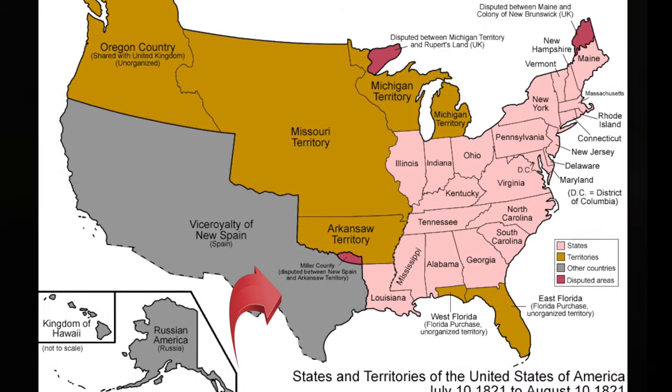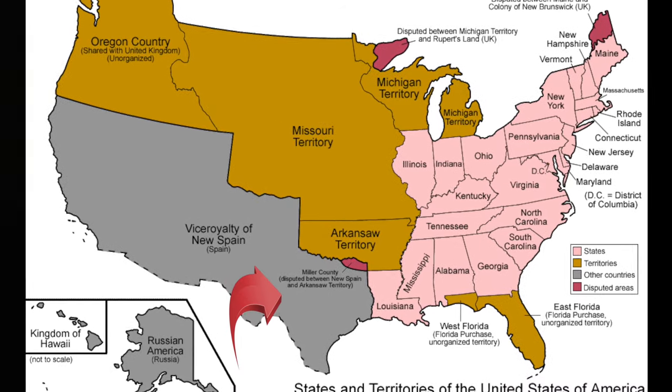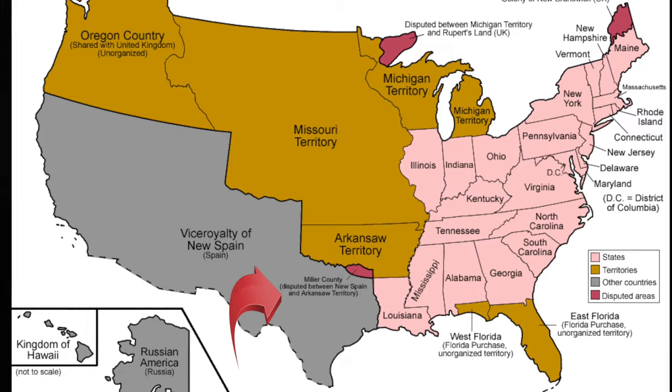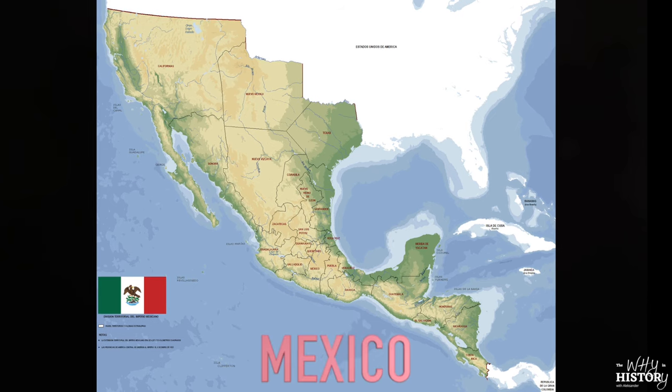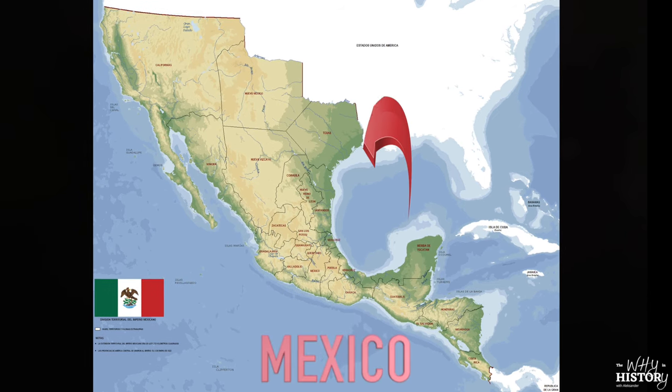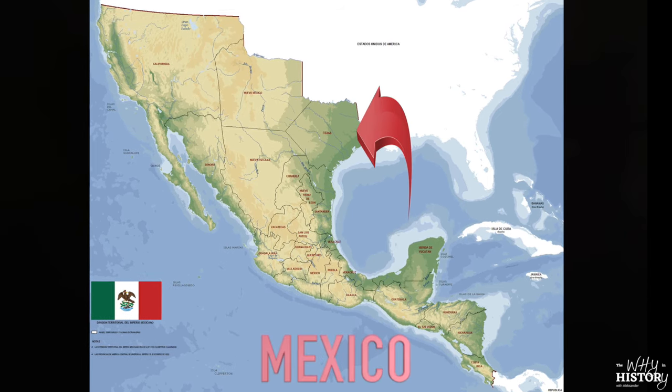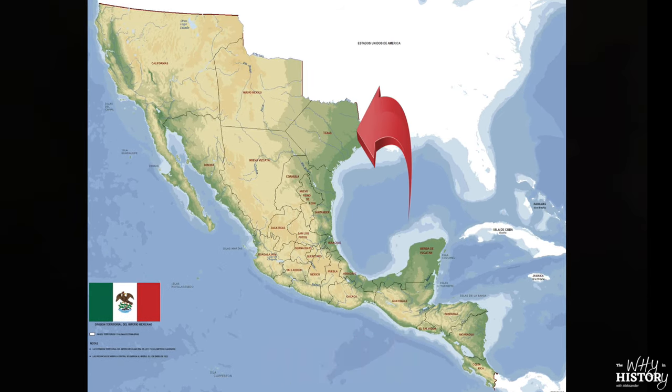Up until 1821, Texas had been a part of the Spanish colony of New Spain. But after New Spain declared its independence and became Mexico, Texas now found itself under Mexican sovereignty.